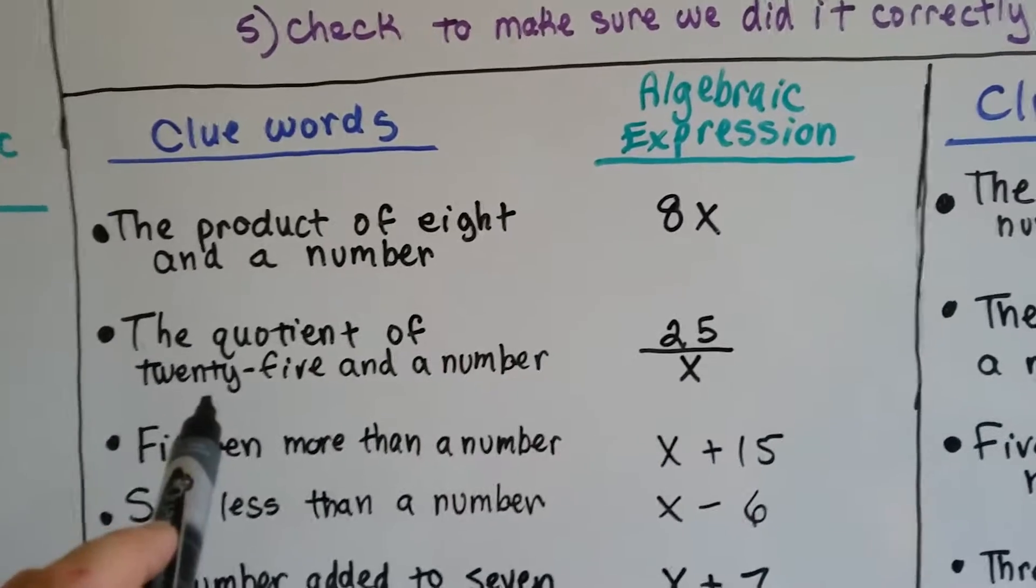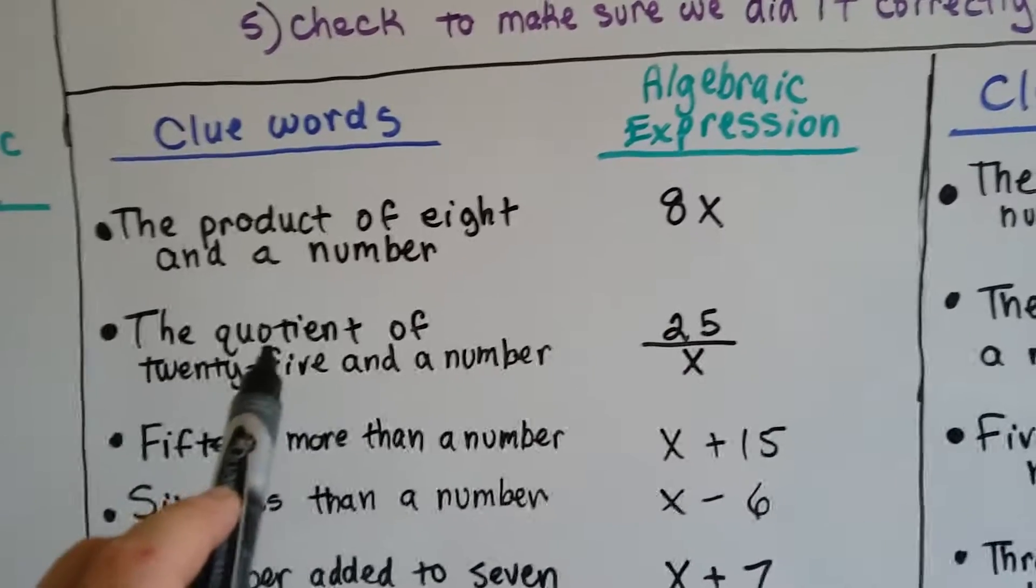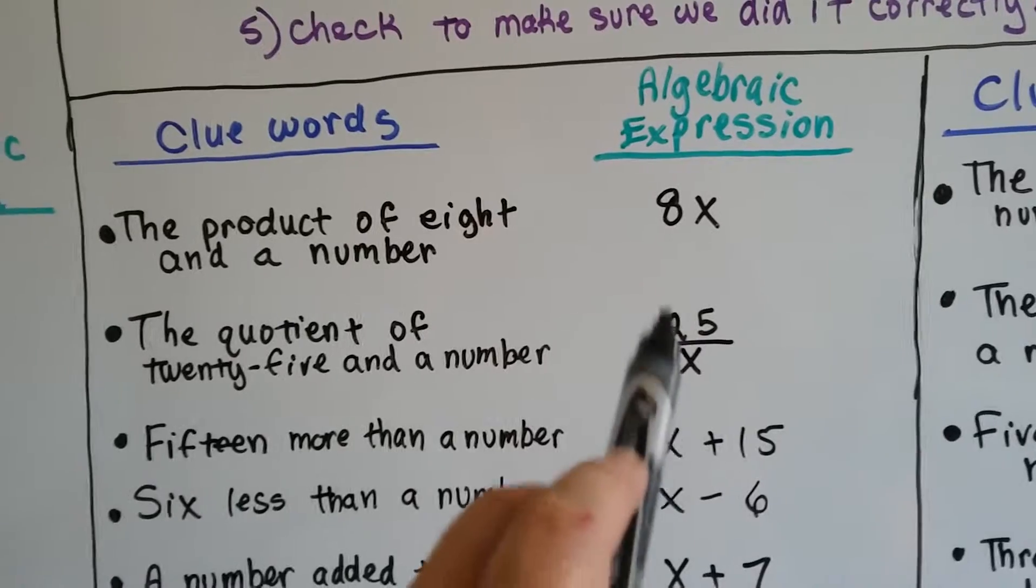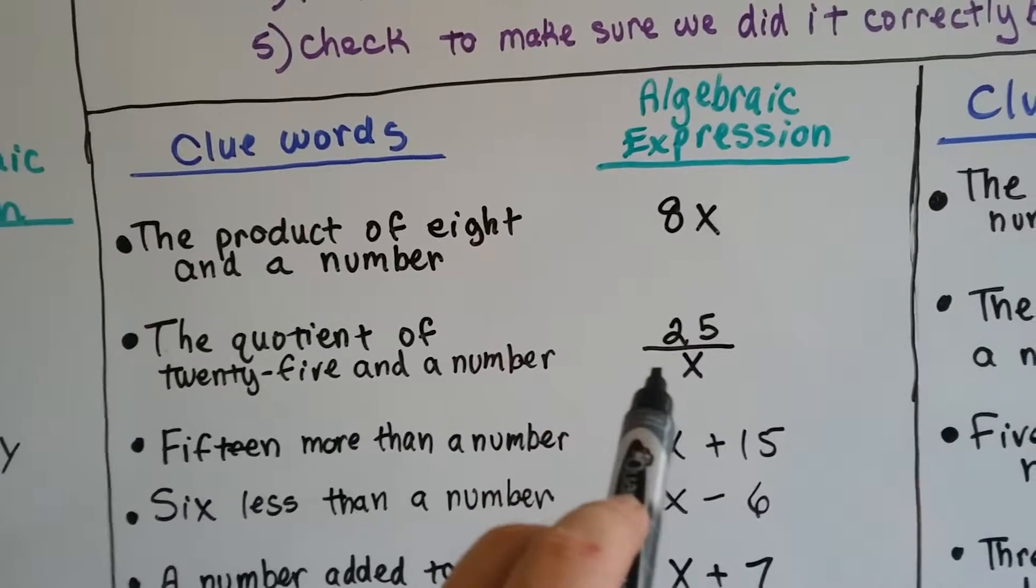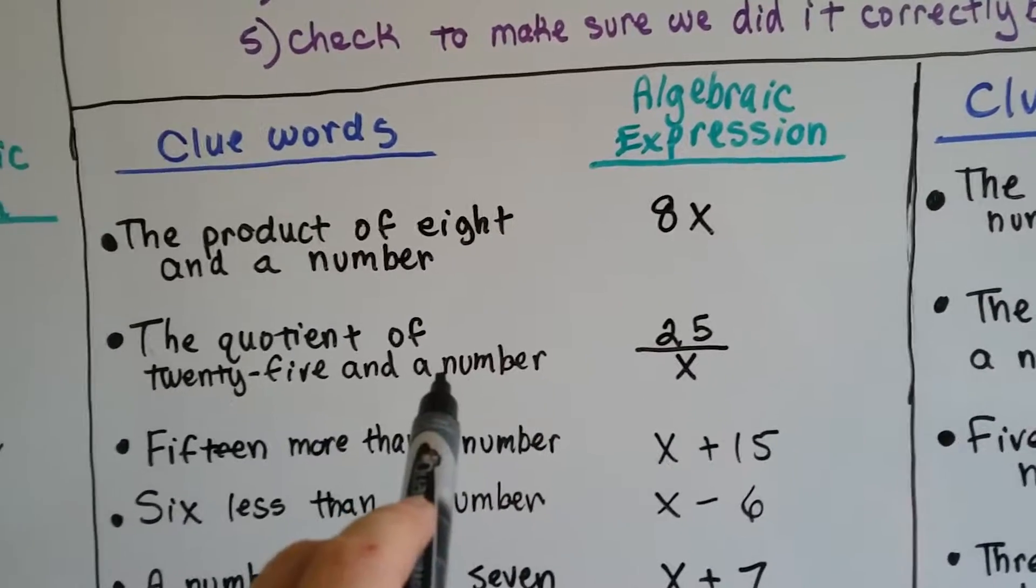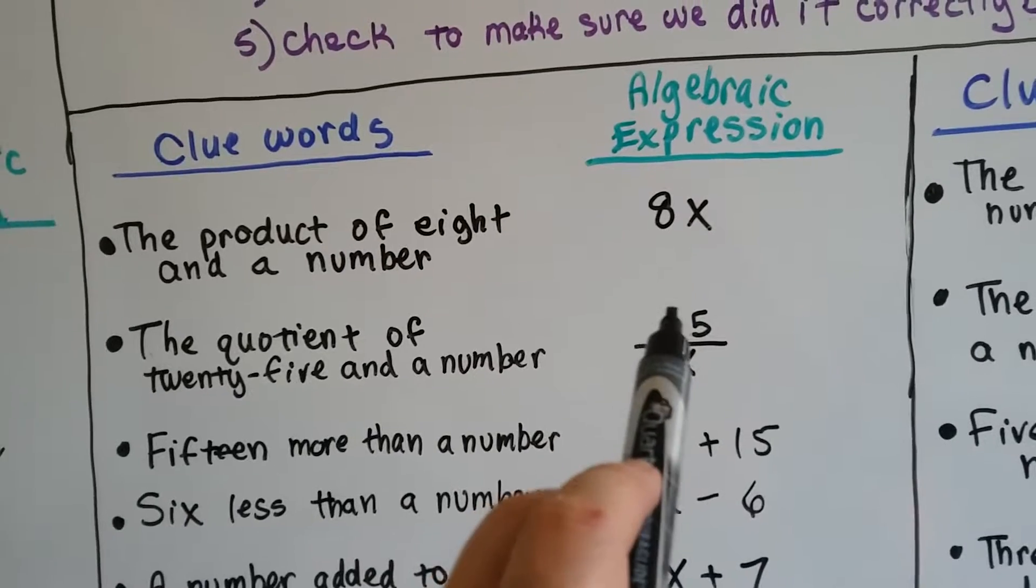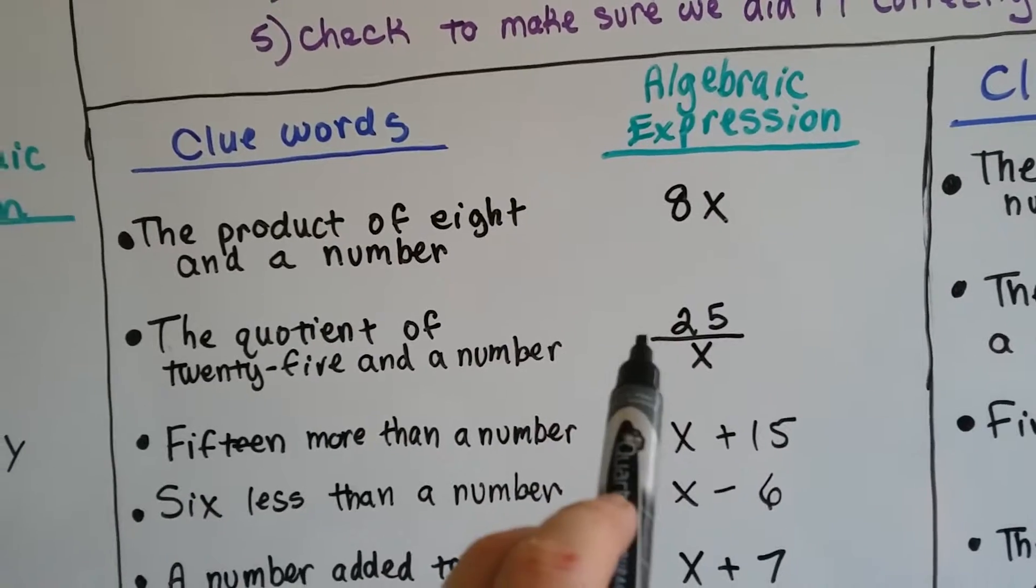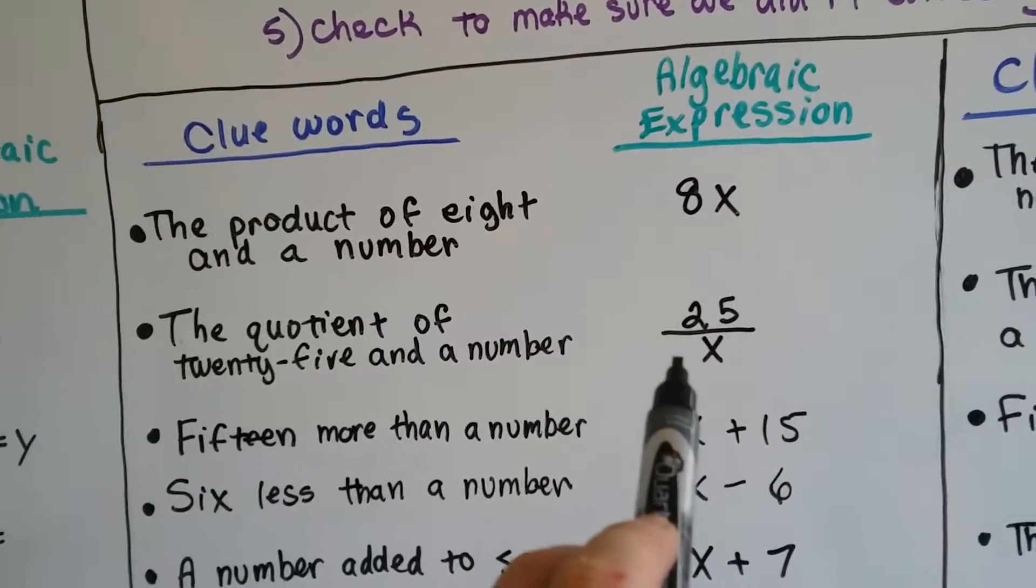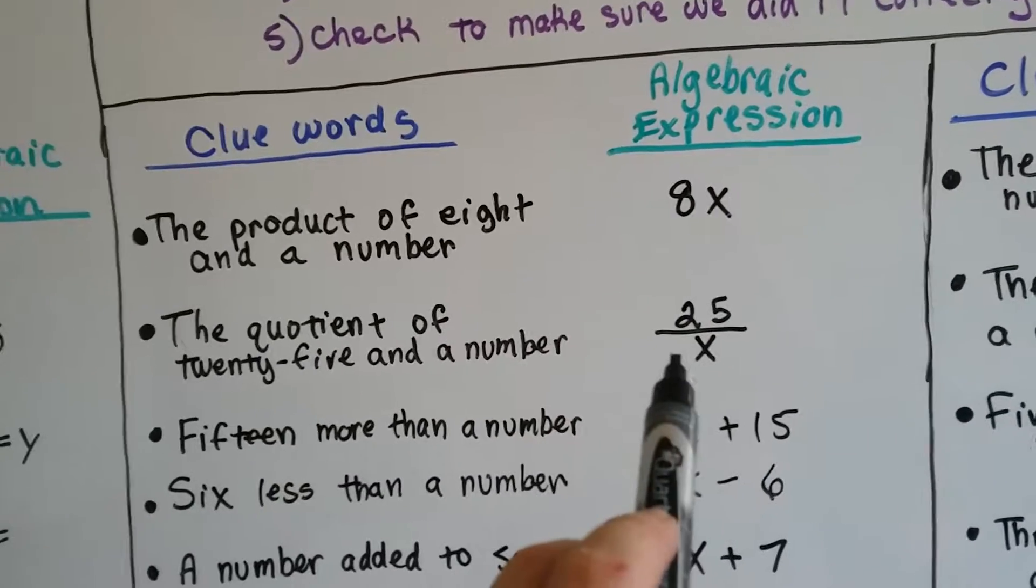The quotient of 25 and a number, quotient tells us it's division. We know fractions are division, little division problems. So if it's the quotient of 25 and a number, we could put 25 over x. We also could have said 25 divided by x equals y.